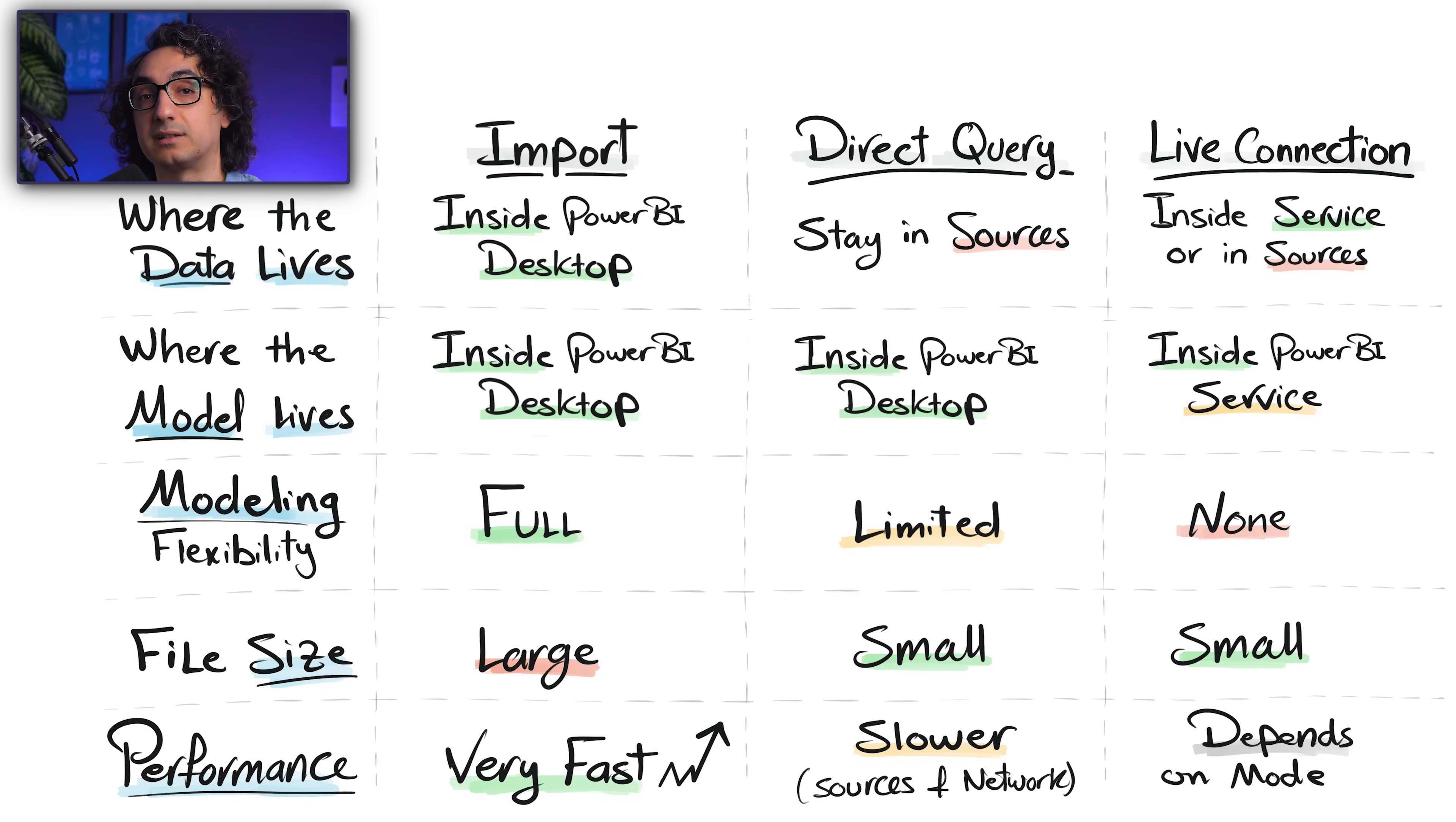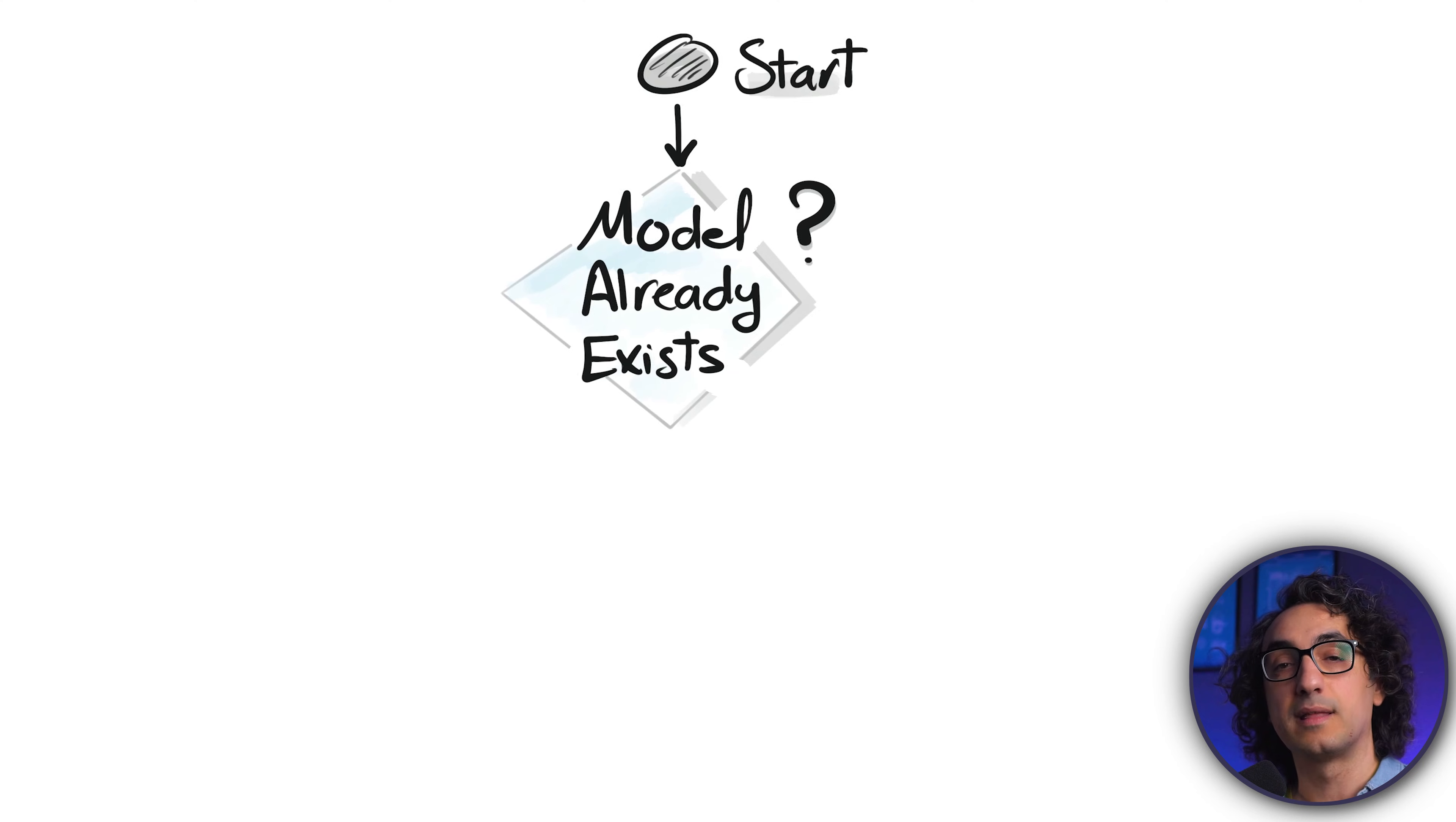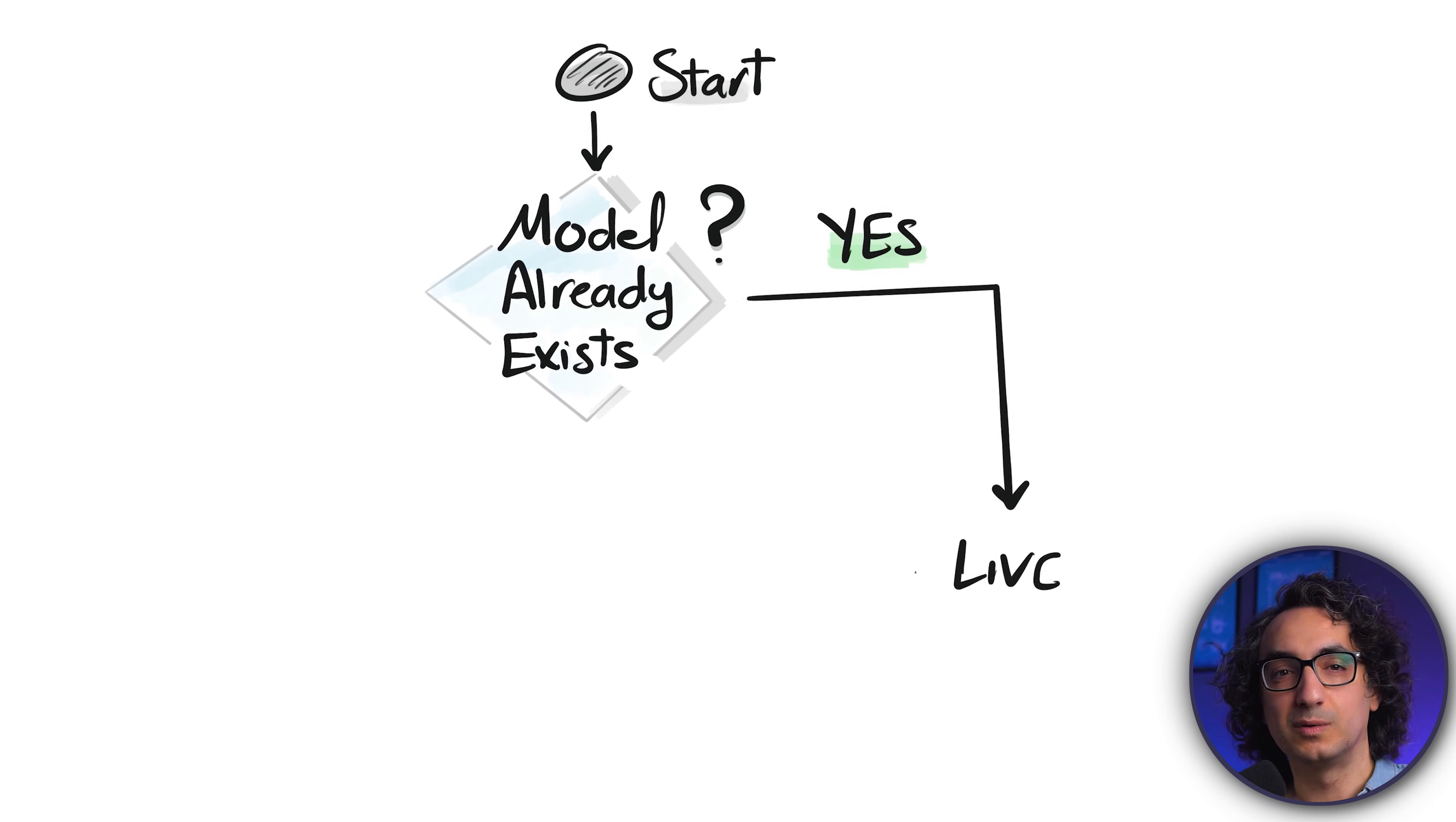And my final words about how to decide between those types. First, ask the question: are you building a new model from scratch, or does a shared semantic model already exist in the Power BI service? If it already exists, then don't rebuild it. Just use Live Connection and build your reports.